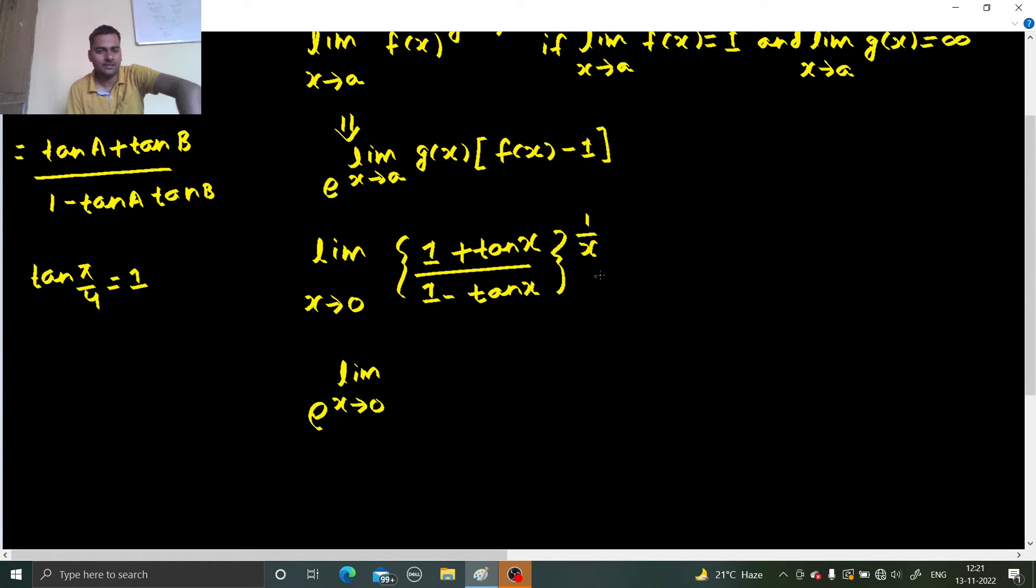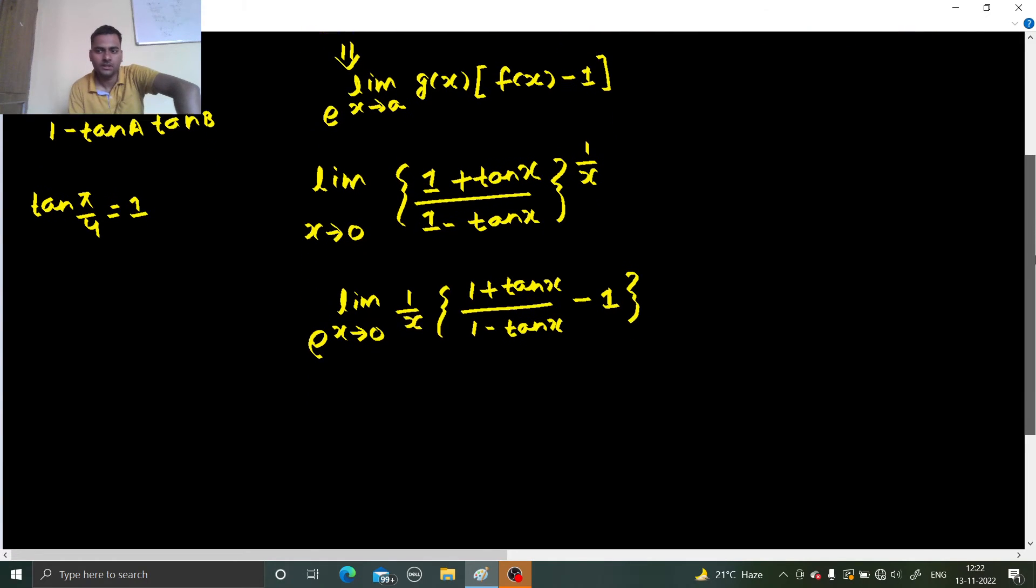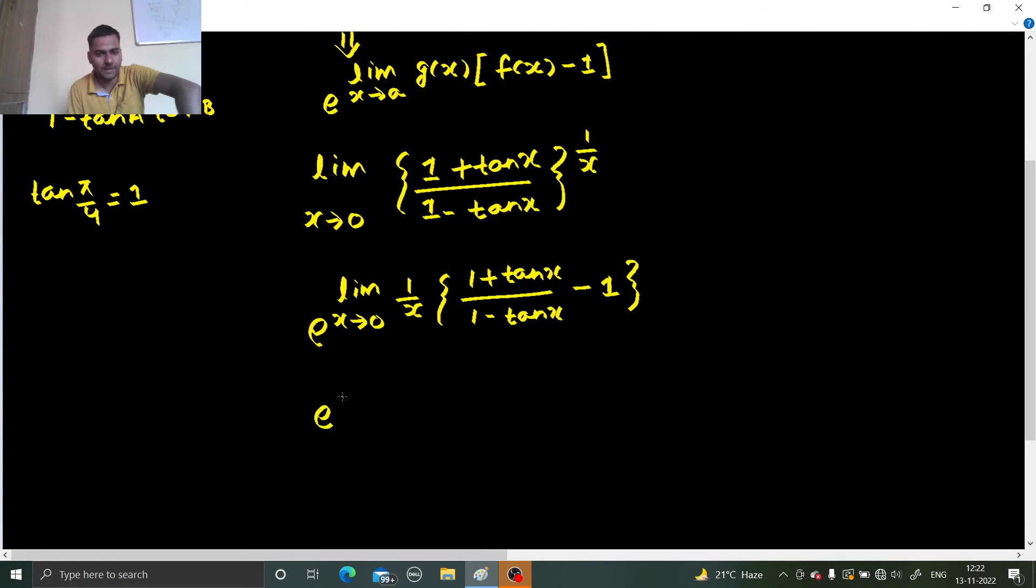We first take power down and base minus 1, so (1 + tan x)/(1 - tan x) raised to 1/x. Let us simplify this, so e power limit x tending to 0: